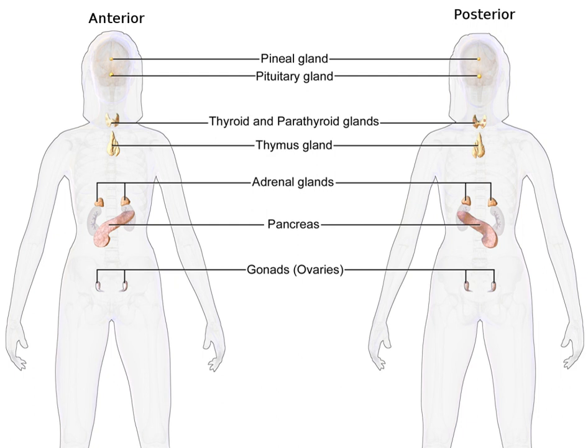A neuroendocrine signal is a classical hormone that is released into the blood by a neurosecretory neuron. Griffin and Oyeda identify three different classes of hormones based on their chemical composition.